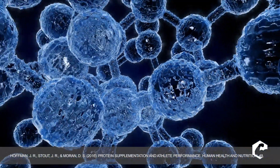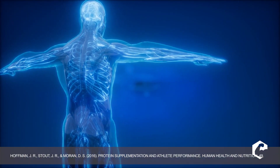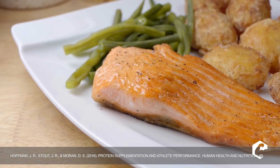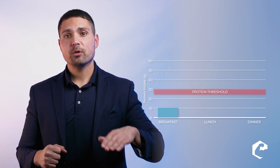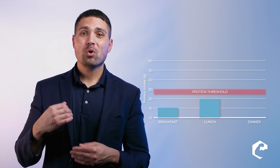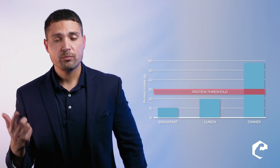We have something called a protein threshold — we basically need to consume at least 25 to 30 grams of protein to hit that threshold. Looking at that skewed distribution: at breakfast, did they hit the threshold for building muscle and losing fat? No. With 20 grams at lunch, probably not either. So the only meal where they maximized the threshold was at dinner.